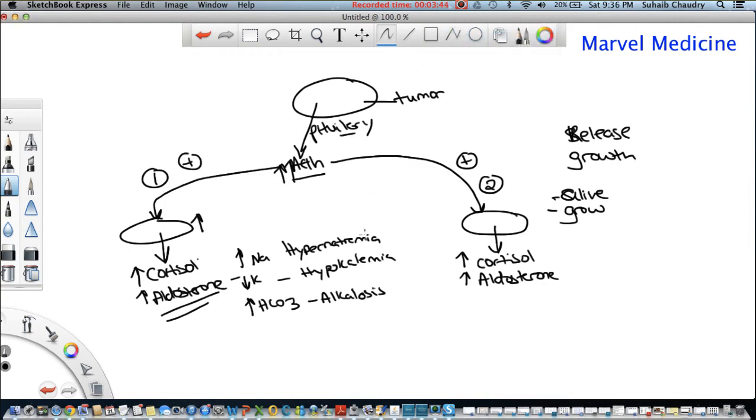Now, the second point I wanted to make here is when this cortisol and aldosterone gets released, what does it do? It goes back and actually inhibits the release of ACTH. This cortisol and this aldosterone is coming back and saying to the pituitary gland, stop releasing ACTH.